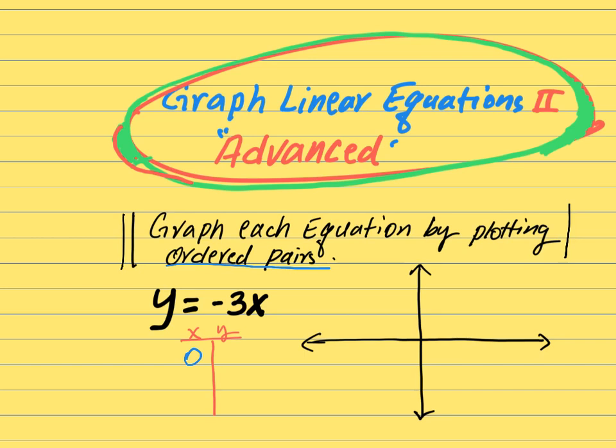Now, 3 times x equals 0 here. When we substitute zero, we get 3 times 0. So that gives us zero. So negative 3 times 0 equals 0. Therefore y is zero. That is our first point. We need a second point, so let's choose x equals 1. When x equals 1, we multiply and get minus 3.